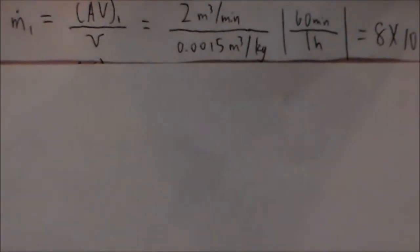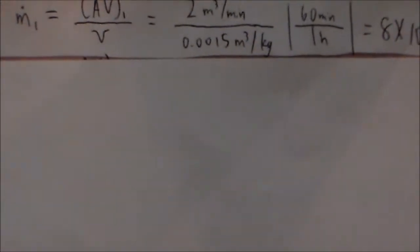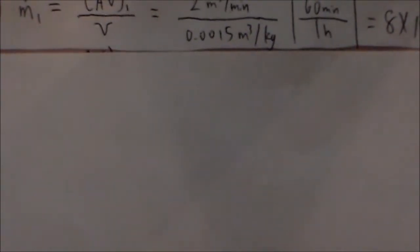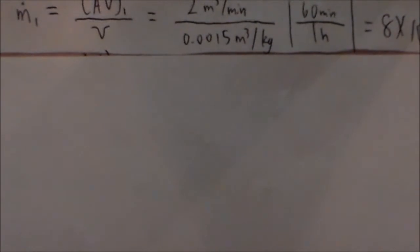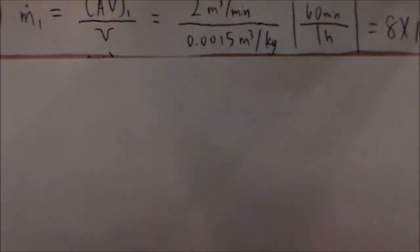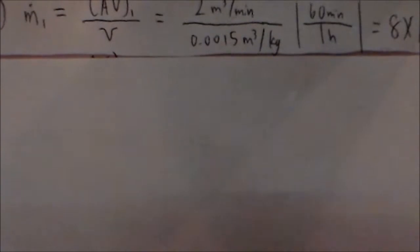The mass flow rate that is coming in is equal to the volumetric flow rate divided by the specific volume. After performing the unit conversions, you would get 8 times 10 to the 4 kilograms per hour.